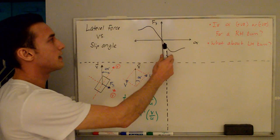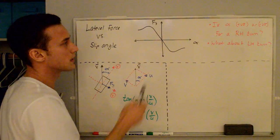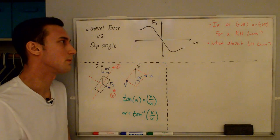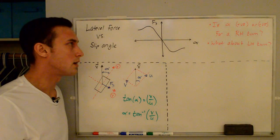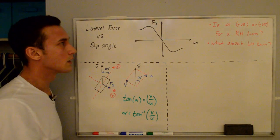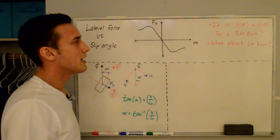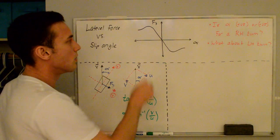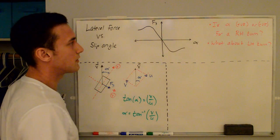Up here on the board I've drawn a plot with F sub Y on the vertical axis and alpha on the horizontal axis — this is a plot of lateral force versus slip angle. The question is: is alpha positive or negative for a right-hand turn, and what about for a left-hand turn? So which range of alpha corresponds to a right-hand turn, and which to a left-hand turn?